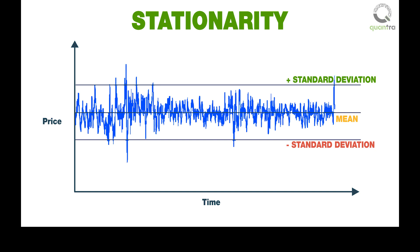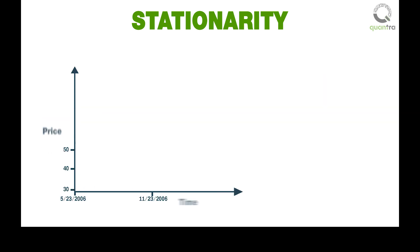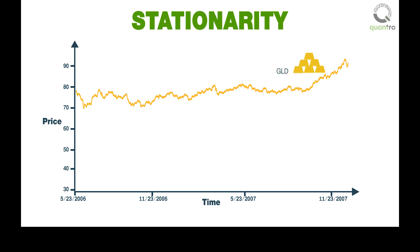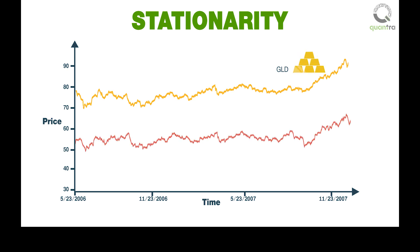The time series stays around the mean. A random walk is not a stationary series. For example, the price of gold ETF GLD is a geometric random walk and is not stationary. Another example of a non-stationary series is gold miners ETF GDX.